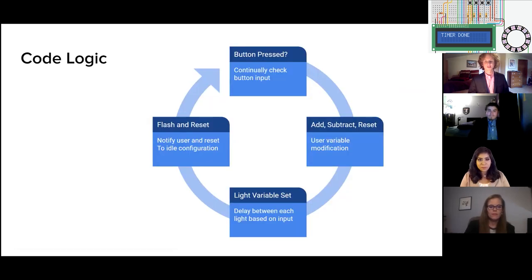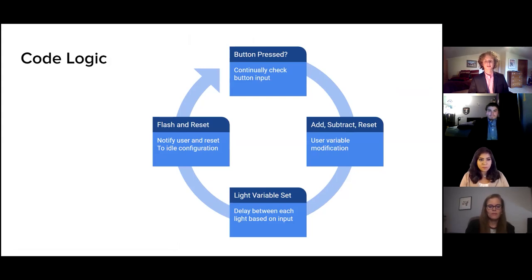The code functions on a simple logic structure. It basically continually reads the button input for continuous user interaction. And then once the user has set the desired time, the lights will begin their countdown by setting a time delay per light. For instance, for a 30-minute timer, the first light will turn off after three minutes, the second after six, and so on. At the end of the time, all the lights will flash and the UI will return to its idle configuration.